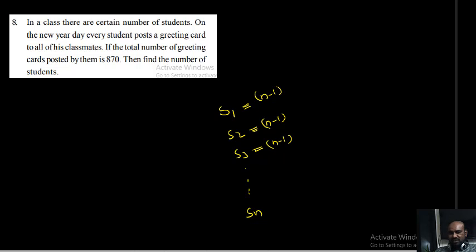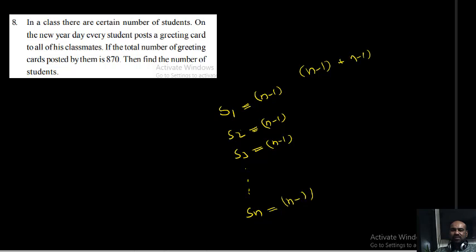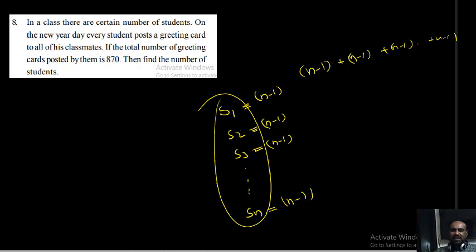S2 can post N minus one greeting cards. S3 can post a greeting card to S1, S3 can post a greeting card to S2, S3 can post a greeting card to S4, S3 can post a greeting card to SN — that's why S3 can post N minus one greeting cards, and so on. SN also can post N minus one greeting cards. Total number of greeting cards: N minus one plus N minus one plus N minus one, added N times.